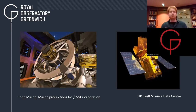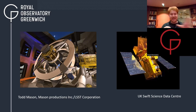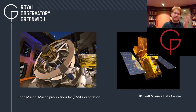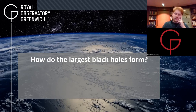The future is to look for more tidal disruption flares using telescopes like the Vera C. Rubin Observatory, which is opening in the next few years, along with the Swift gamma-ray burst satellite and other telescopes. But when it comes down to it — how do the largest black holes form? The answer is: we don't know. Sorry.